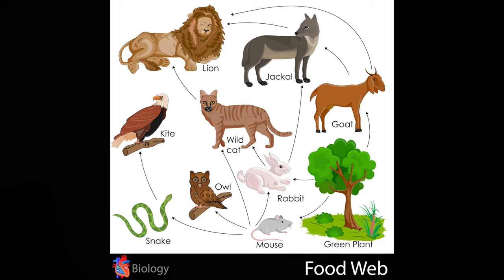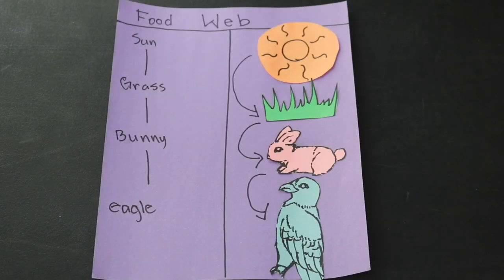Now that you know what a food web is, I challenge you to do two food webs: a terrestrial food web and an aquatic food web. Don't forget to share pictures and videos of your food web. I would love to see what you came up with.